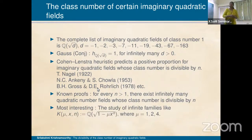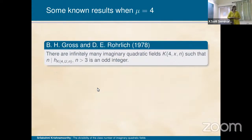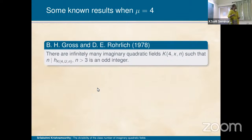The most interesting study concerns infinite families. The notation I use is K(μ, x, n), which is Q adjoined with the square root of 1 minus μ·x^n. The most interesting families are μ = 1, 2, or 4. One result by Gross and Rohrlich, which appeared in Inventiones, states: there are infinitely many imaginary quadratic fields K(4, u, n) such that n divides the class number of K(4u, n), where n is an odd integer strictly greater than 3.